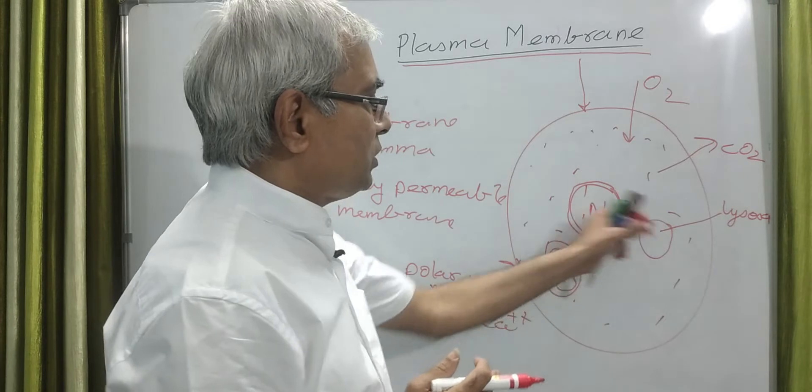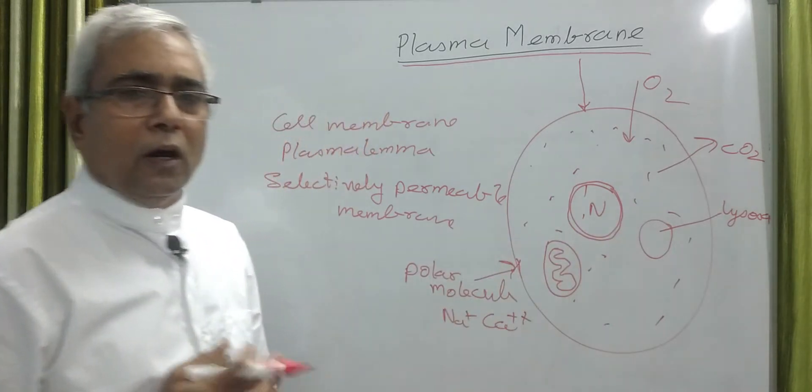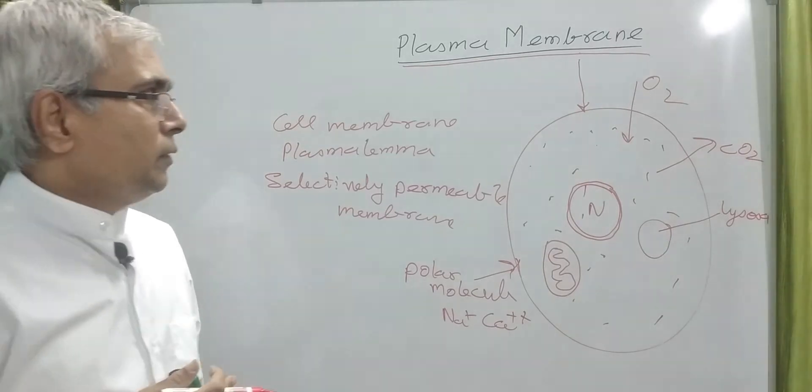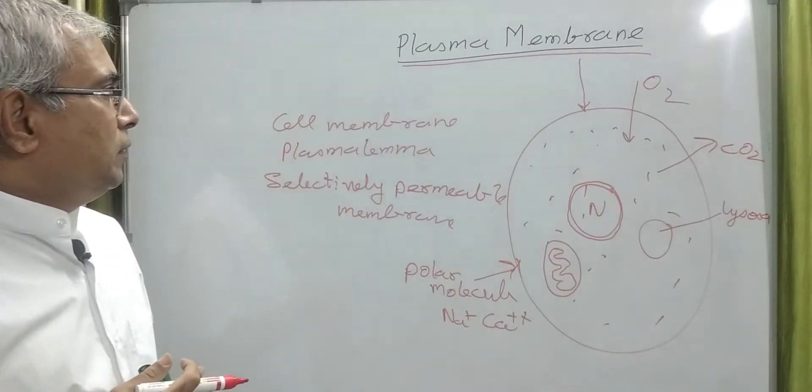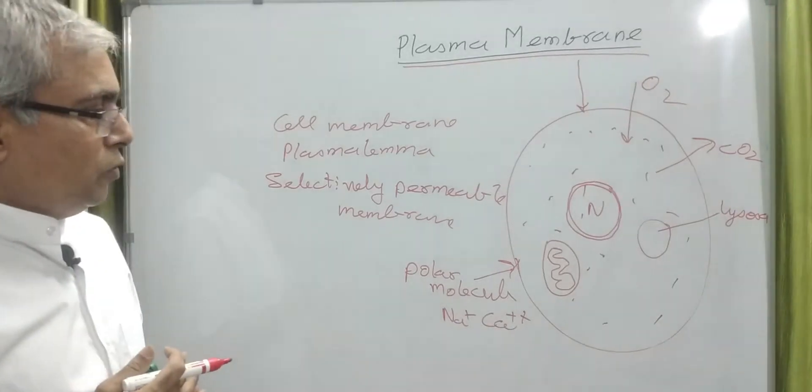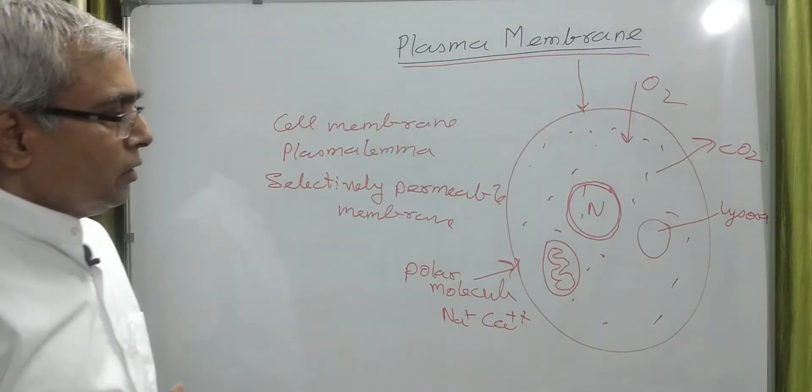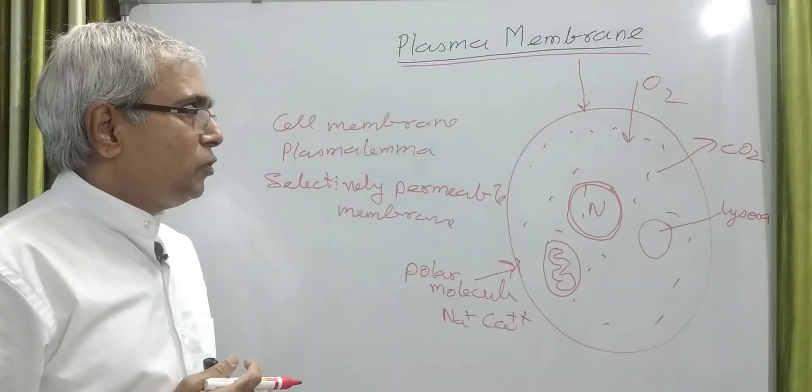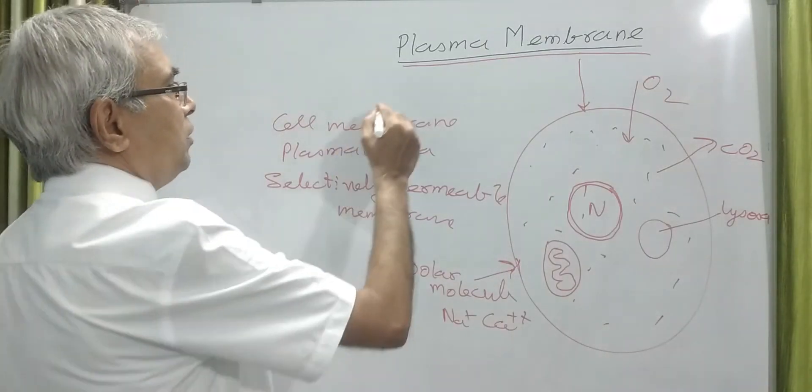The membranes which surround these organelles are of nearly the same nature. Though the first function of this membrane is to define the outer limit of the cell and form a physical boundary of the cell.